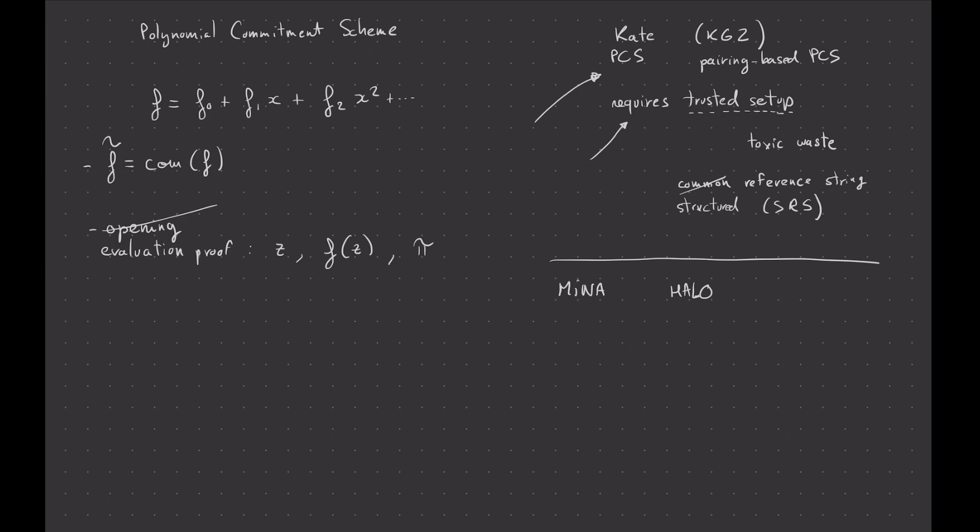Plonk is instantiated not with the Kate polynomial commitment scheme, but with another commitment scheme based on the inner product, which is just how to multiply two vectors together. And I'm not going to explain that here. Maybe I'll explain that in a future video. But these inner product-based PCS, that's actually called bulletproof type or some people call them bulletproof type of PCS, because they're not exactly... They're evolutions of the Boodle proof paper and the bulletproof paper.